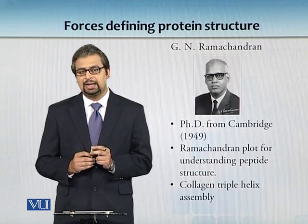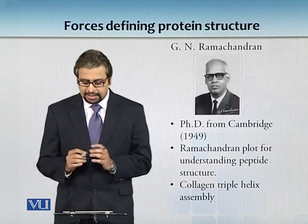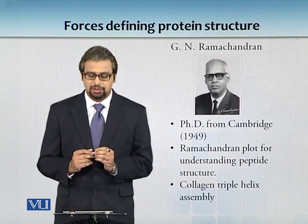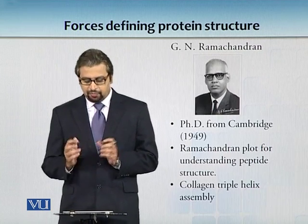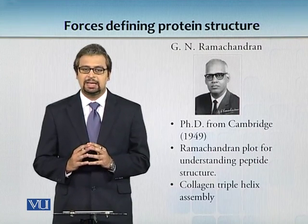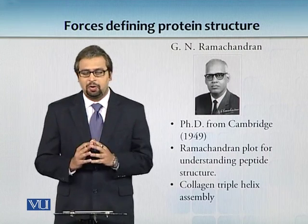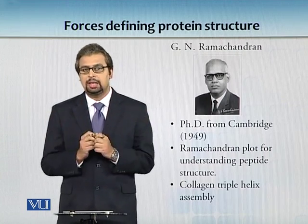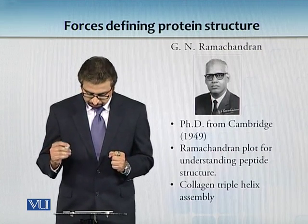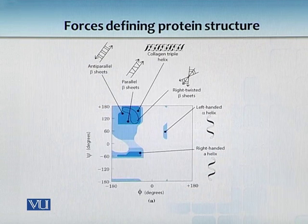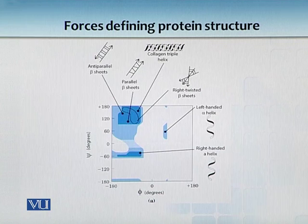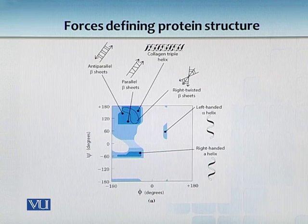One key and important issue was highlighted by a guy named Ramachandran. He did his PhD from Cambridge in 1949 and what he did was amazing. He basically gave you a graph on which you can plot how the polypeptide backbone is folded. His plot is named after him and is known as the Ramachandran plot. In this particular plot, on the upper left corner you can see anti-parallel beta sheets and parallel beta sheets are packed, while on the upper right-hand side quadrant you can see left-handed alpha helices.